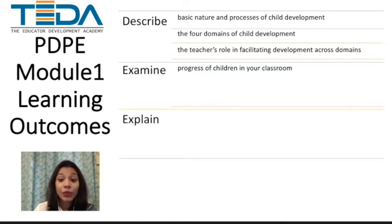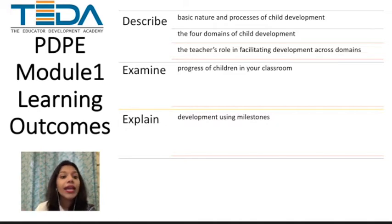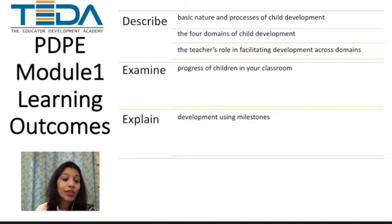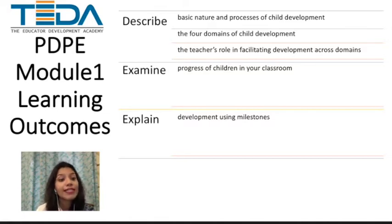The next thing we want you to do is to be able to explain development using milestones. So not just examine their progress, but also say: if this is where a child has reached now, in two, three, or four months we expect to see these kinds of changes. That will help you determine whether your interventions or classroom practices are appropriate for the needs of the child, and also help you understand whether the child is developing typically.